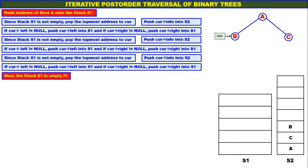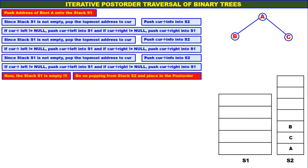Now the stack S1 has become empty. Therefore, go on popping from stack S2 and place it in the post order. Topmost element is B — pop it, place it in the post order. Next topmost element is C — pop it, place it in the post order. Next topmost element is A — pop it, place it in the post order. So this is the post order for the given binary tree: B, C, A.